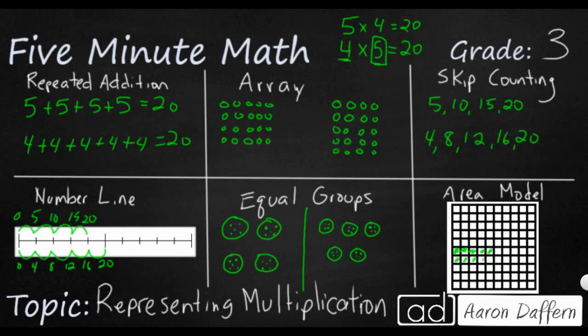That would represent one version. And then if I wanted to do the other one, I would simply shade in four across and five down. So those are the different ways that you can represent multiplication, and we need to realize in third grade that multiplication can be viewed in all of these different ways.